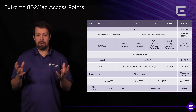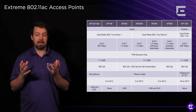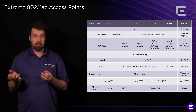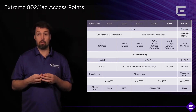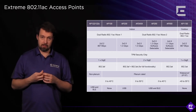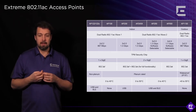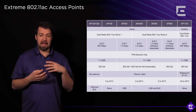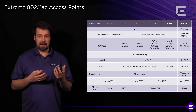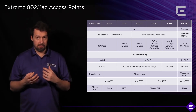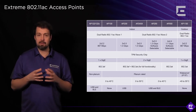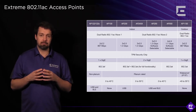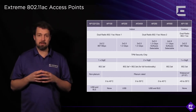It's a dual radio 802.11ac Wave 1 AP with 2x2 radios. Then we have the AP130 and AP230, which are the more enterprise type of APs.